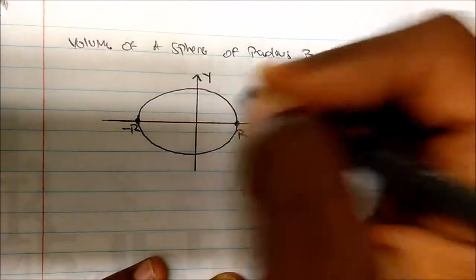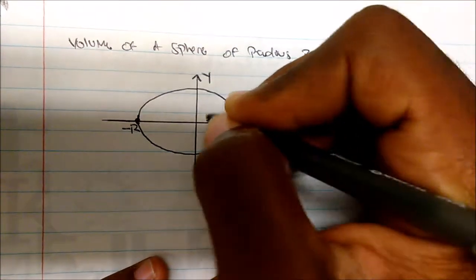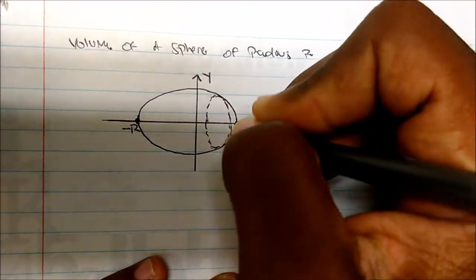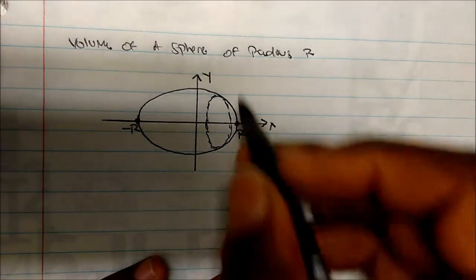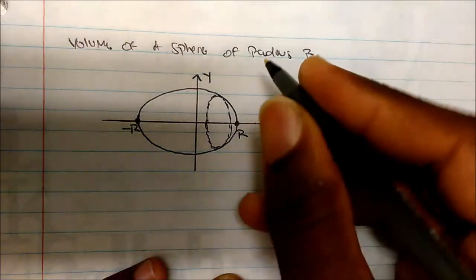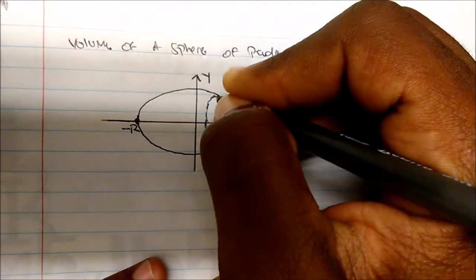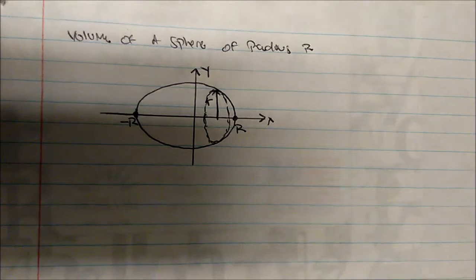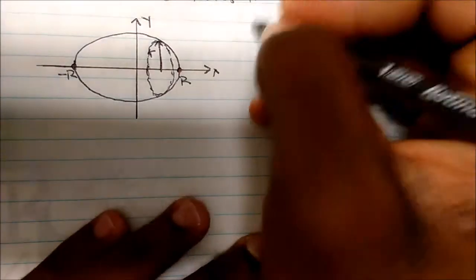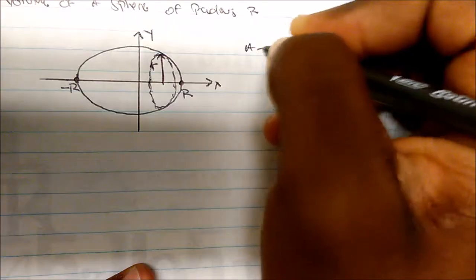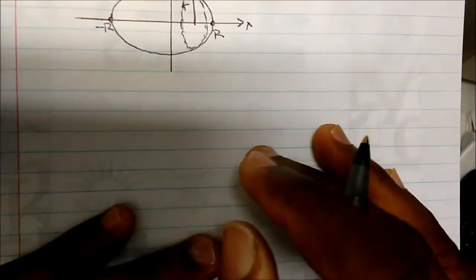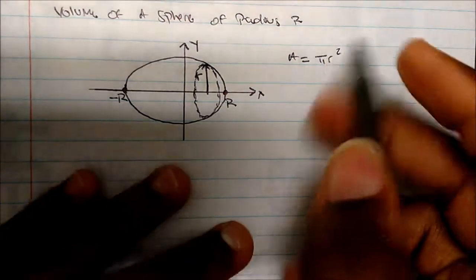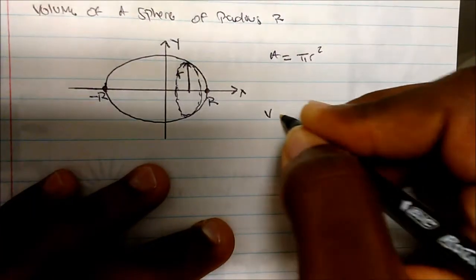The idea is that if I slice this up into a disk, what actually forms is a circle. The radius of the circle is from the center to the outer bound, which is some distance r. We know the area of a circle is π r squared. So if we integrate this, we'll actually find the volume.